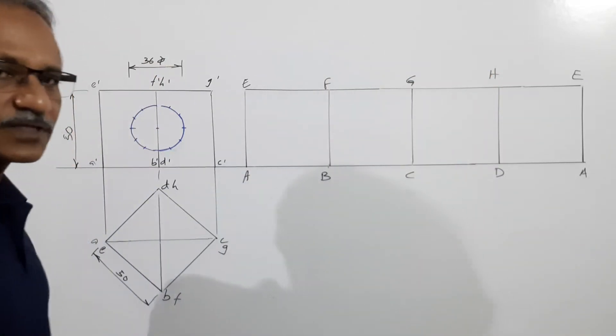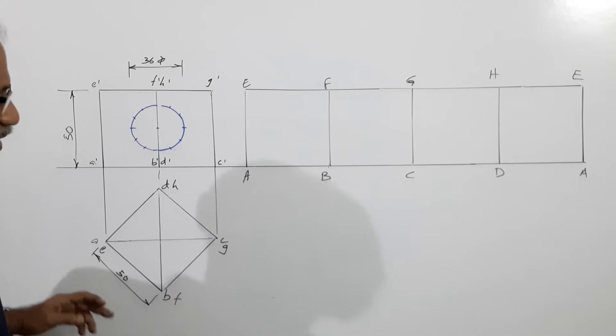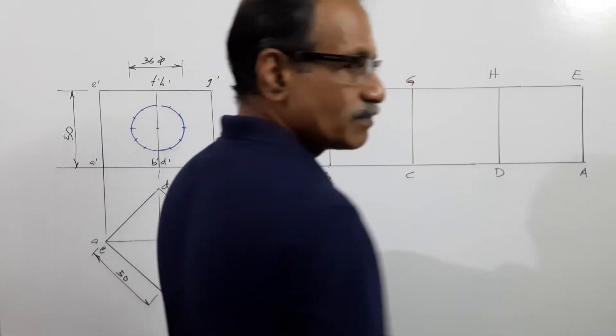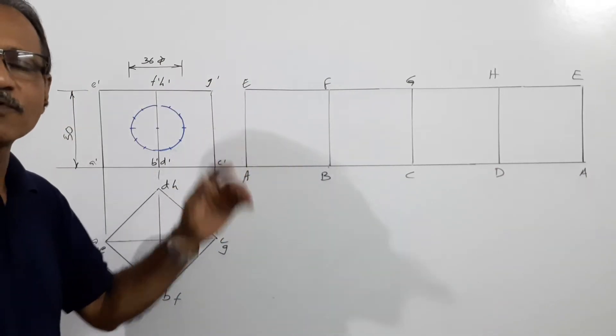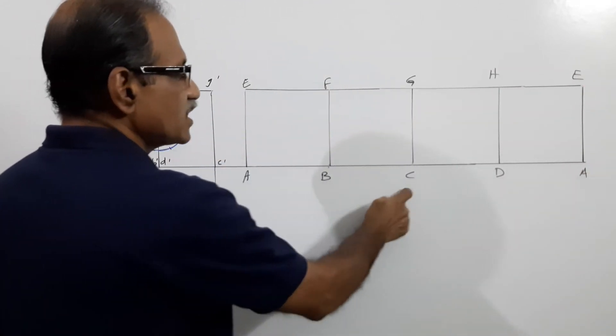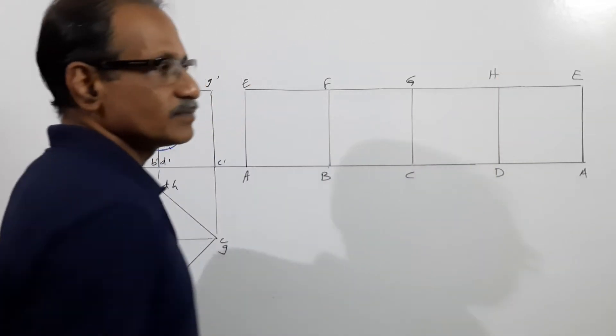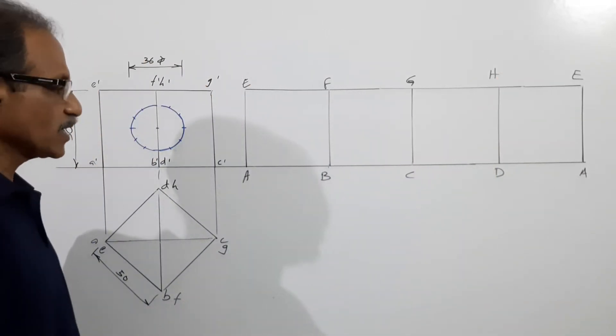Draw the development of the lateral surface. If the side is 50, this is 50, 50, 50, 50. Height also is 50. Four pieces of 50 square: A, B, C, D, A; E, F, G, H, E. It's the development of lateral surface of the cube.